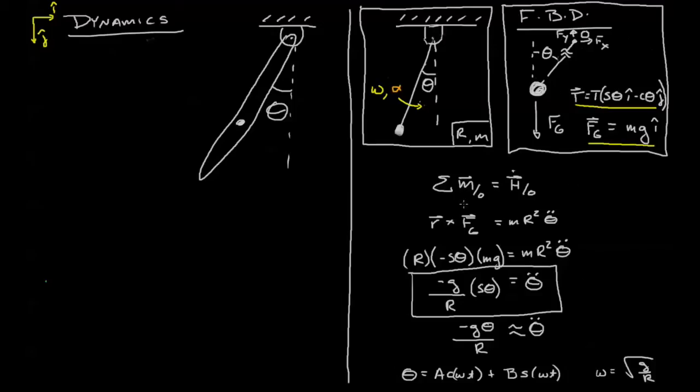Hopefully you were able to look at the sum of the moments being equal to the change in angular momentum, set up your differential equation, and with a small angle approximation find out that theta follows an A cosine omega t plus B sine omega t solution, with the interesting fact that omega equals the square root of g over r. This should be nothing new as we've done this before.